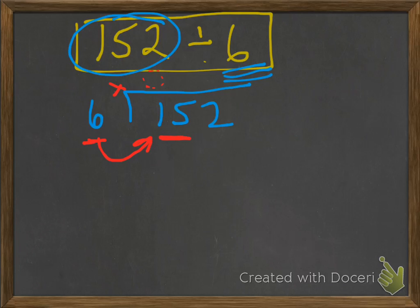So next we have to look at the number 15. And again, we have to think, alright, 6 times what gives us 15 or close to 15? In this case, we know that 2 times 6 will get us 12.